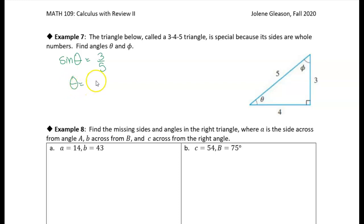I'll solve for theta by taking the inverse sine of three over five. So theta equals the inverse sine of three over five. Putting that in my calculator, I get 36.87 degrees approximately. It's not exact.